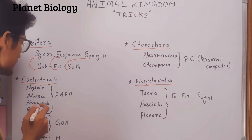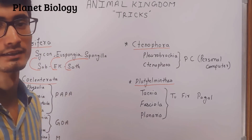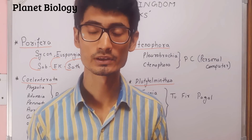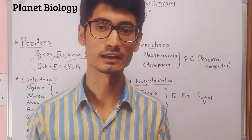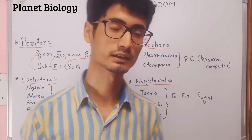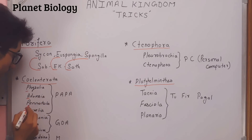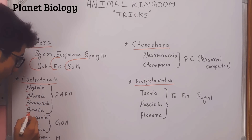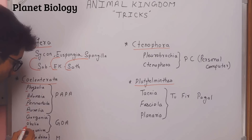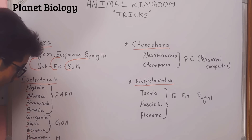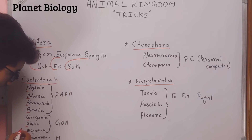Second, let's talk about Cnidaria. In Cnidaria you can see a long list — this is also our trick. The examples are: Physalia, Adamsia, Adamsia, Aurelia, Eudora, Gorgonia, Obelia, Leucosolenia, and Meandrina. This is not a long list — this is a trick.